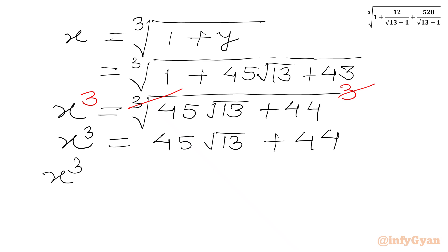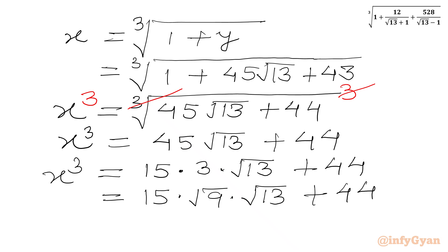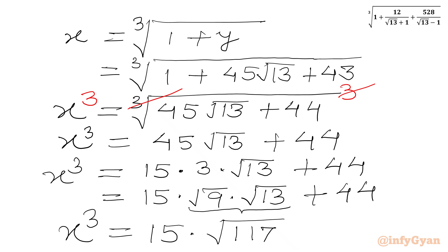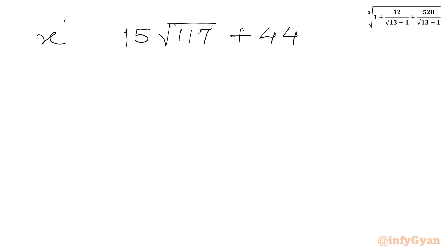Or I can write x cubed equal to 45, which I will write as 15 times 3, times square root 13 plus 44. Then 3 can be written as square root 9, so we have 15 times square root 9 times square root 13 plus 44. Now I will club these two radicals and write x cubed equal to 15 times square root of 9 times 13, which is square root 117, plus 44.